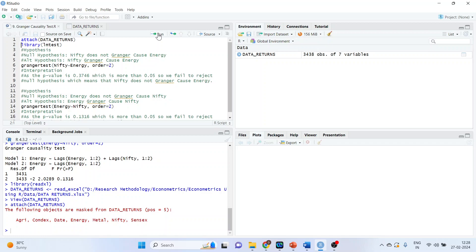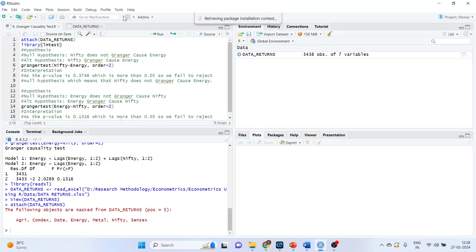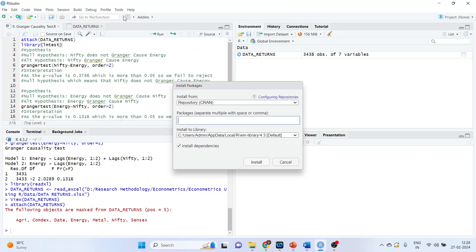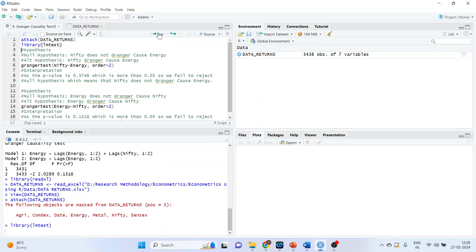To run Granger test, it is necessary that we require the LM test package. Go in tools, install packages. Make sure your internet connection is on. Press LM test, install it. Activate. Run the library. Library LM test, run.